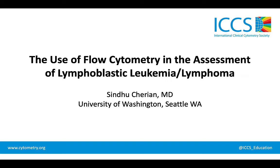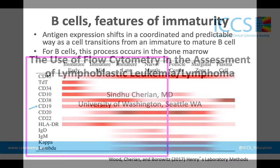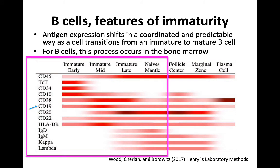What other features can we use to define immature B-cell populations? Antigen expression will shift in a very coordinated and predictable fashion as a cell transitions from an immature to mature B-cell. This process usually occurs in the bone marrow, so we can see different stages of B-cell maturation there, and we can use expression of various antigens to define our immature cells.